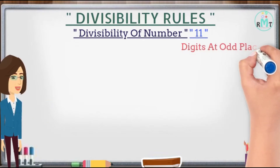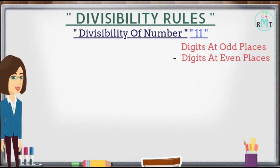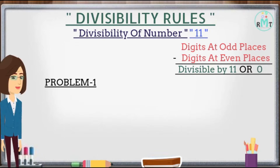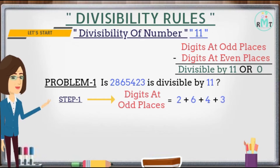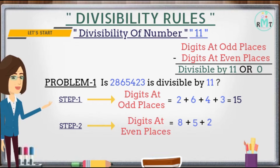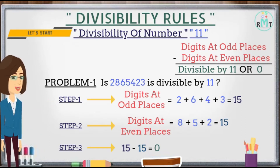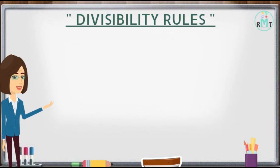Problem 1: Is 2865423 divisible by 11? Step 1: We will add the digits at odd places and we get 15. Step 2: We add the digits at even places and we get 15. Step 3: We subtract the sum of digits at even places from odd places and we get 0. Hence 2865423 is divisible by 11.